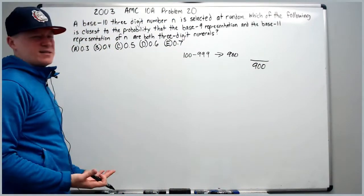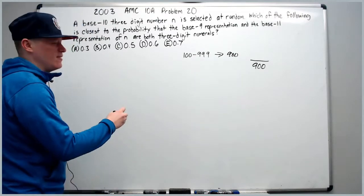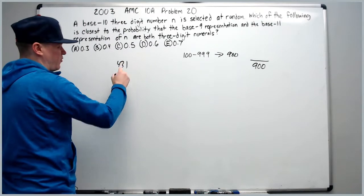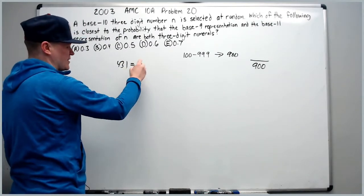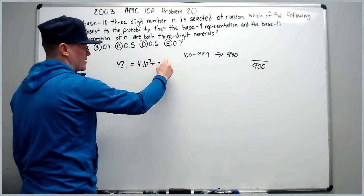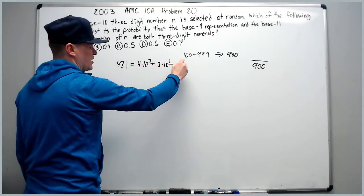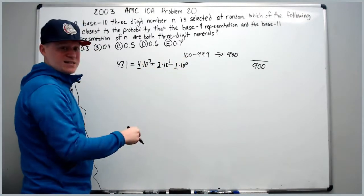The next thing we want to understand is what does it mean to have different bases? Let's look at base 10 for a second. When you write 431, what does that mean? It really, in base 10 you can think of it as 4 times 10 squared plus 3 times 10 to the first plus 1 times 10 to the 0. And that's what it means in base 10.